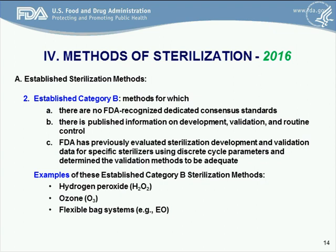Taking a look at established category B — these are methods for which there are no FDA recognized dedicated consensus standards. There is published information on development, validation, and routine control, and FDA has previously evaluated sterilization development and validation data for specific sterilizers using discrete cycle parameters and determined the validation methods to be adequate. Examples of established category B are hydrogen peroxide, ozone, and flexible bag systems.